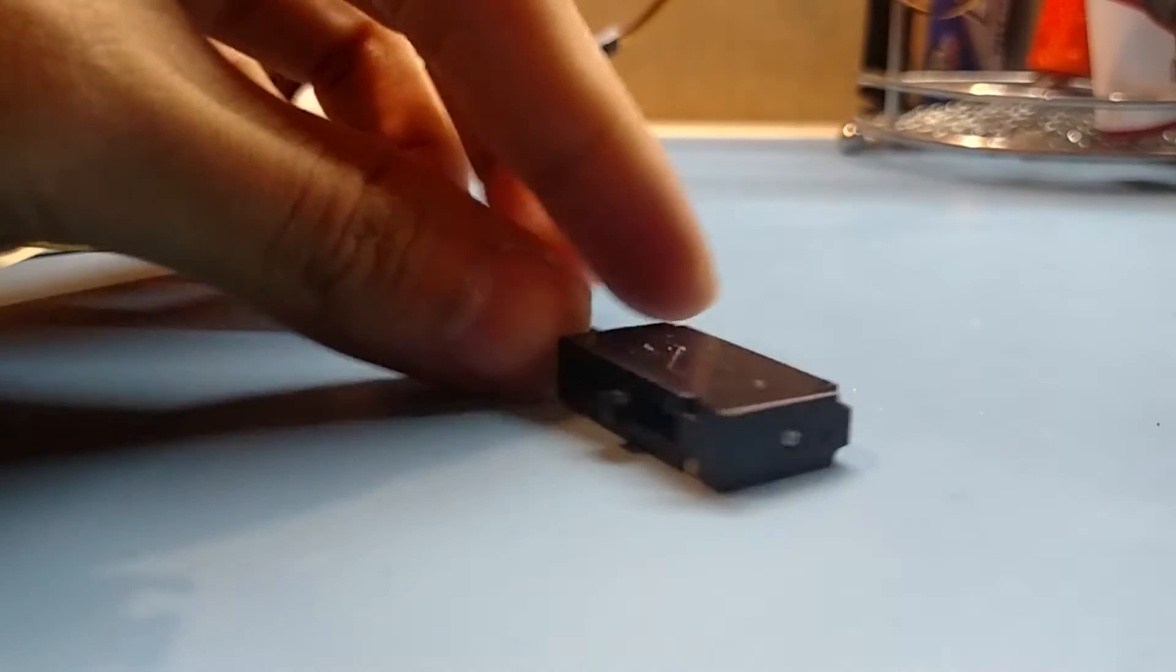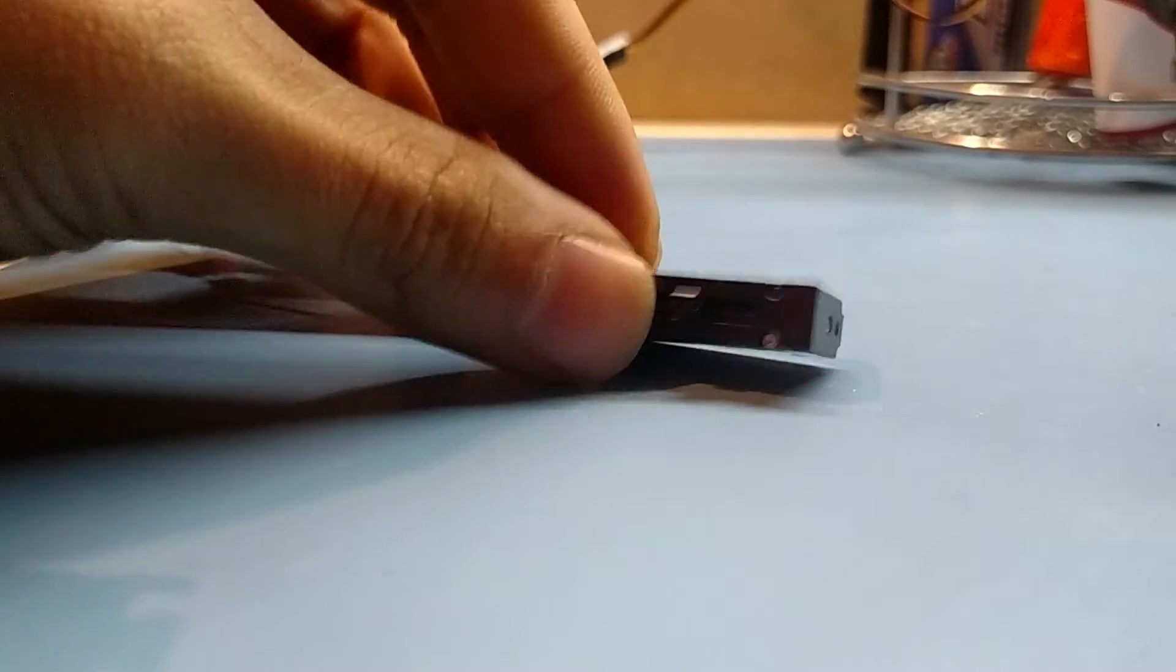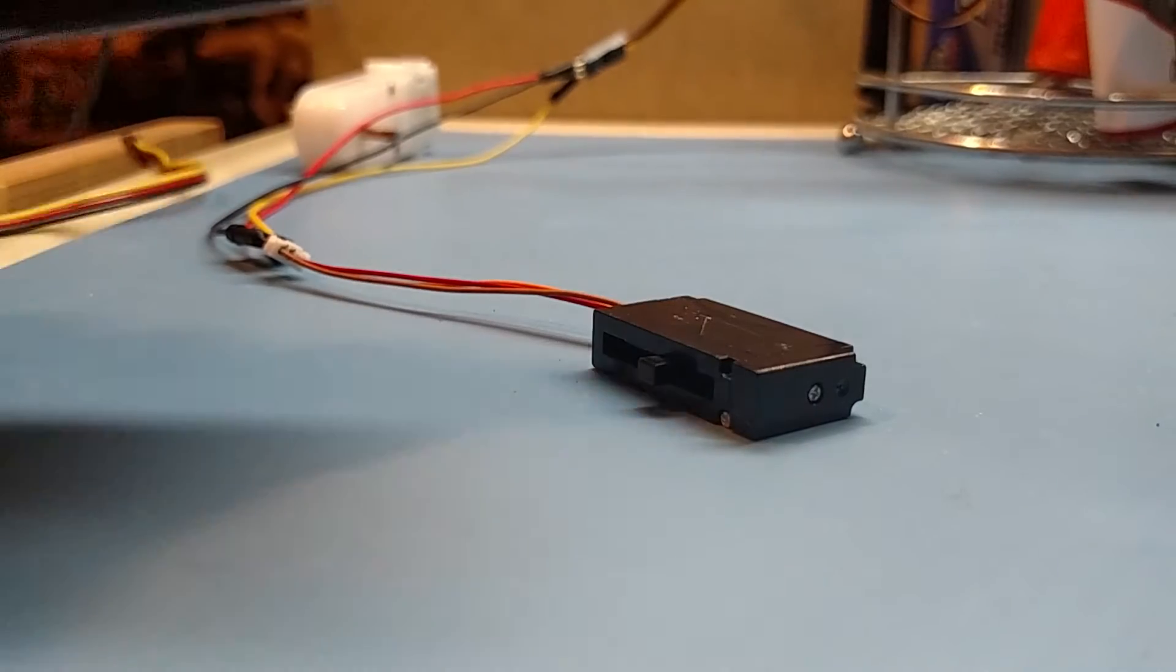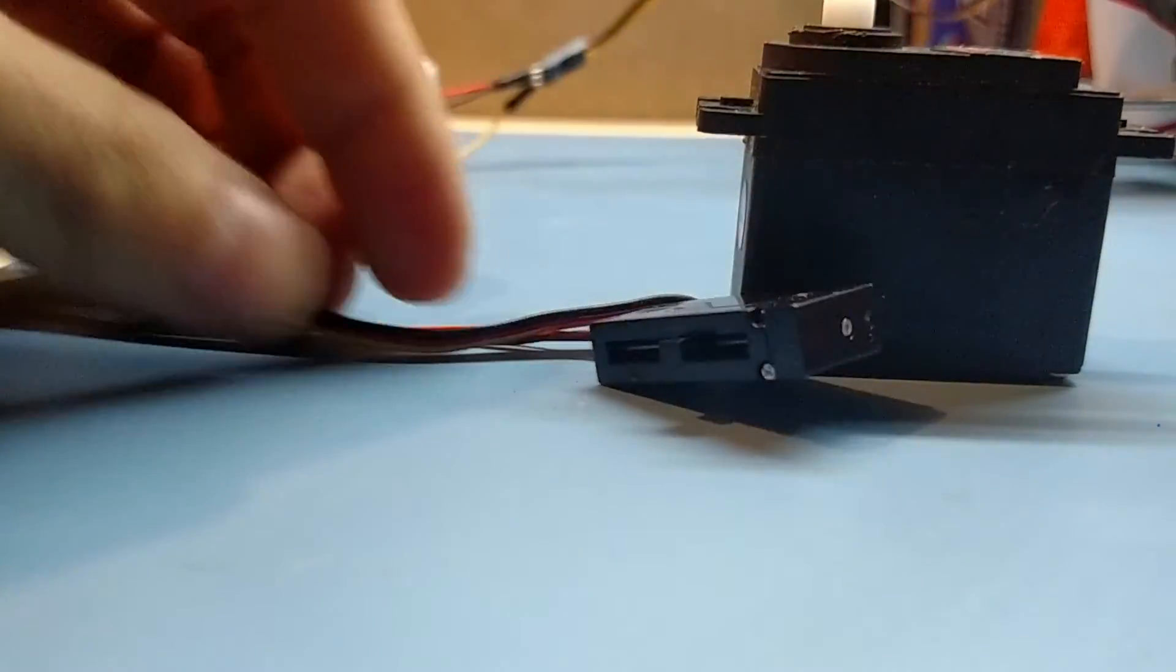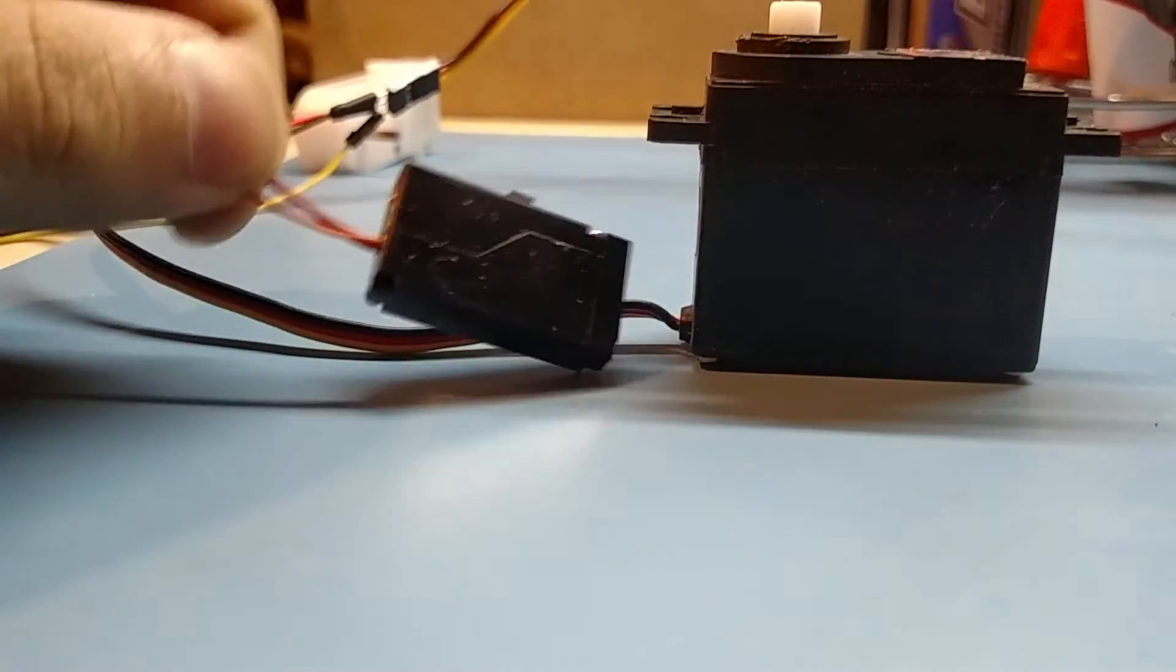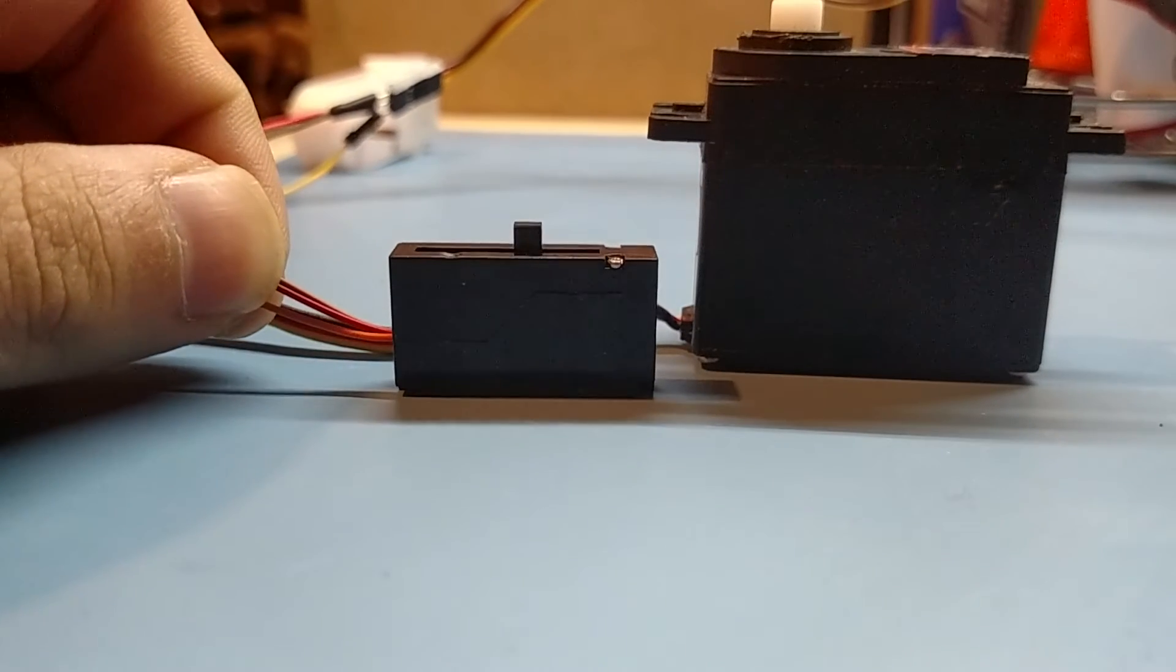This is a VS19 Pico linear servo. This is a 20mm stroke servo. Here it is next to your traditional HS311 high-tech servo. So it's very, very small.